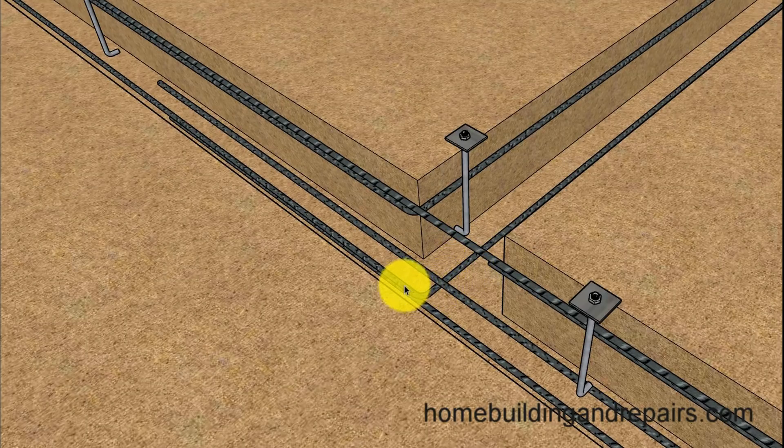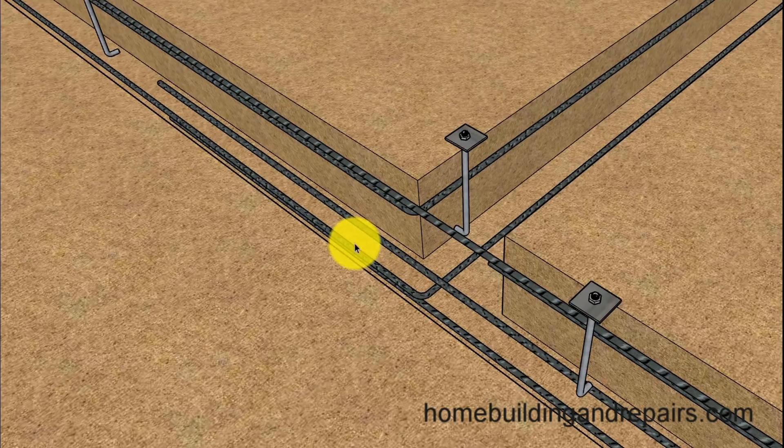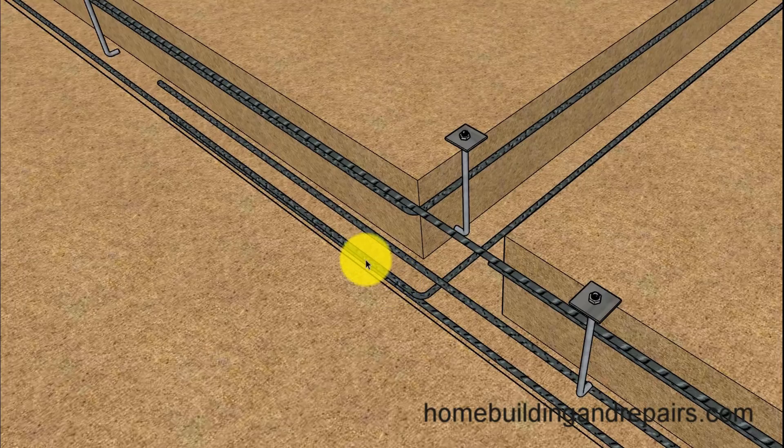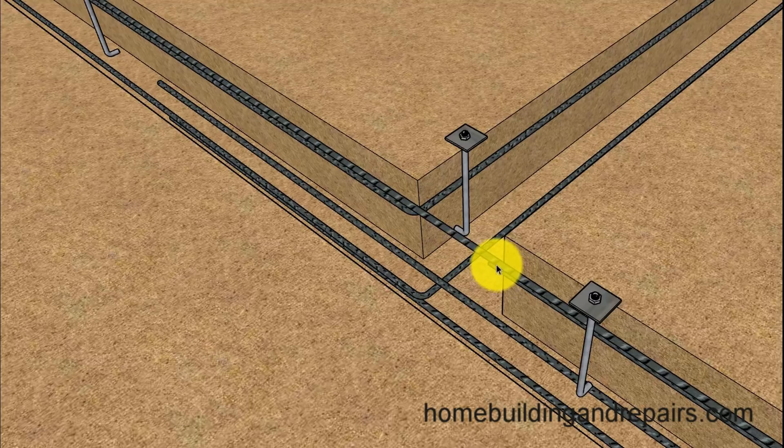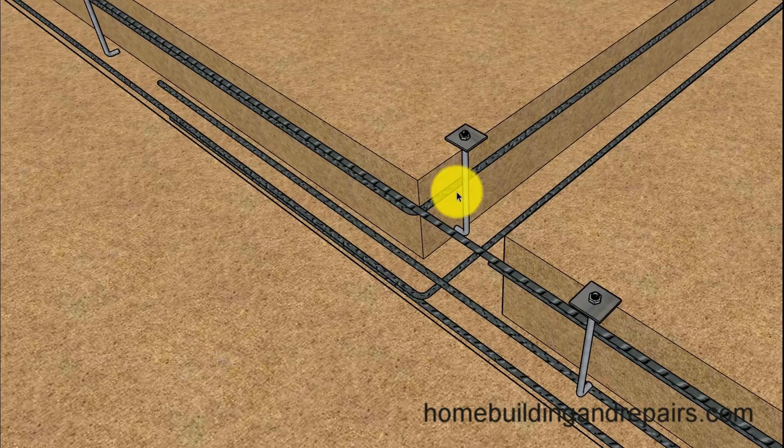You can see here where the rebar on the bottom is lapping. This one here goes this way. The bottom one that goes to the garage would need to be tied to this, and then the top where the stem wall is, this one here could run in and tie into this one if this one was going to be raised for the stem wall. Again, this would depend on the engineer.